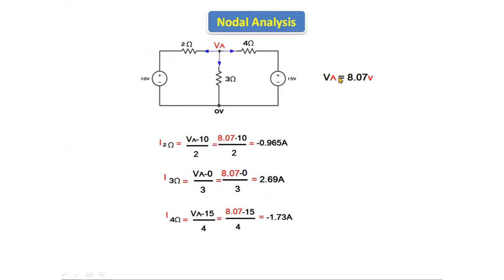The node voltage Va = 8.07 volts. To find the current through the 2 ohm resistor: i1 = (Va − 10)/2 = (8.07 − 10)/2 = −0.965 amperes. To find the current through the 3 ohm resistor: i2 = (Va − 0)/3 = 8.07/3 = 2.69 amperes.